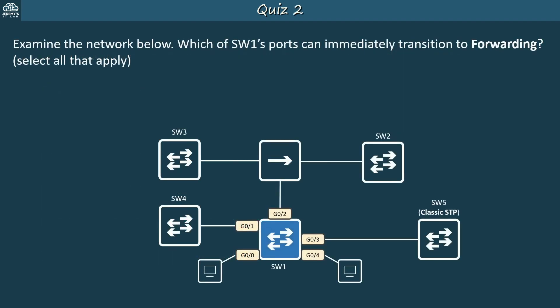Question 2: Examine the network — which of SW1's ports can immediately transition to forwarding? The answers are G0/0, G0/1, and G0/4. G0/0 and G0/4 are edge ports connected to end hosts, so they can use PortFast to immediately transition to the forwarding state. G0/1 is a point-to-point link connected to another switch, so it can use the RSTP sync process to immediately transition to forwarding. G0/2 is connected to a hub and uses the RSTP shared link type, so it won't be able to use the sync process. G0/3, although a point-to-point link, connects to SW5 which runs classic STP, so SW1 G0/3 has to function like a classic STP port — taking 30 seconds to transition to forwarding.